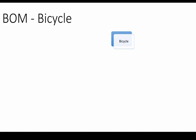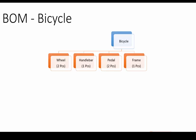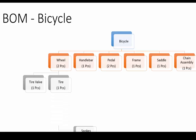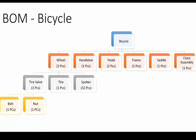The finished good is the bicycle, which is made up from wheel, handlebar, pedal, frame, saddle, and chain assembly. Wheel is again made up from tire valve, tire, and spokes. Tire valve is made up from bolt, nut, and cap.